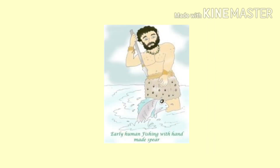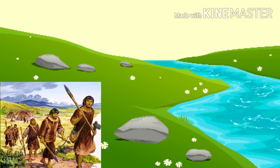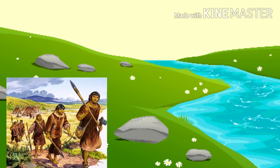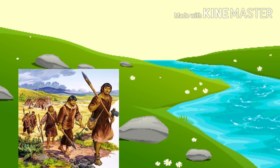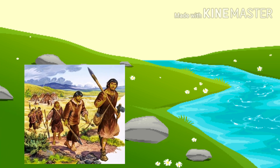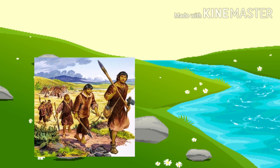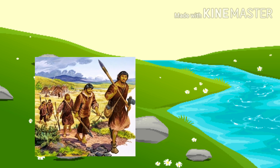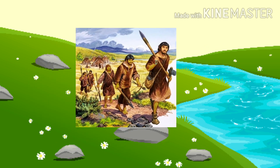Most plants are seasonal — they bear fruits or seeds in a particular season. So, to get a constant supply of fruits, roots, seeds, etc., people needed to be on the move. People also needed to move in search of water, as some rivers and ponds become dry during summer.